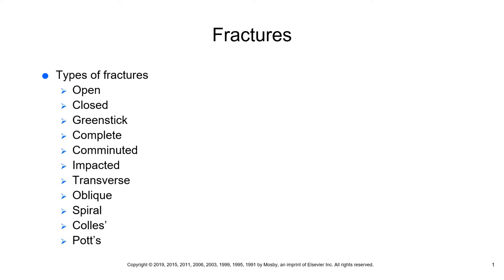Fractures are also described according to their location on the bone — you may hear a proximal fracture, a mid-shaft fracture, or a distal fracture. Bone is very vascular, so bleeding will occur at the fracture site and out into the surrounding tissues, causing a lot of bruising in and around that fracture.